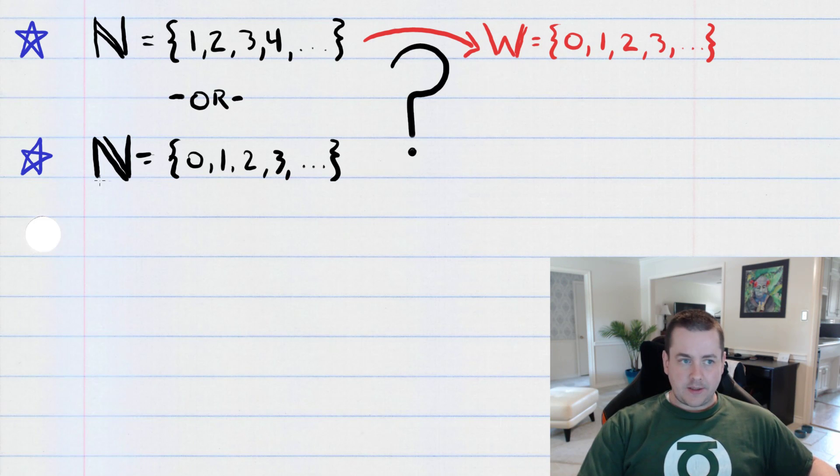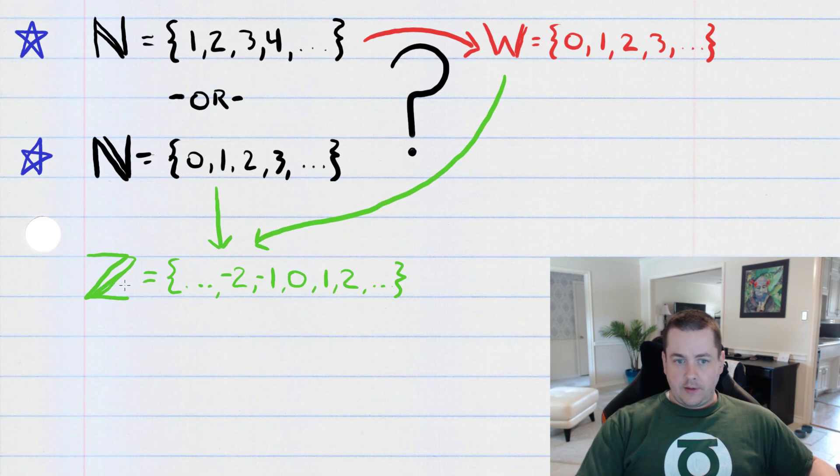In either case, though, what's going to happen after this is we'll define the set of integers which contain zero, the positive whole numbers, the negative whole numbers.